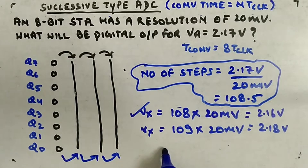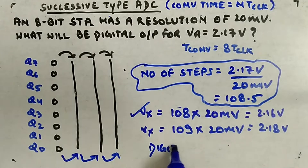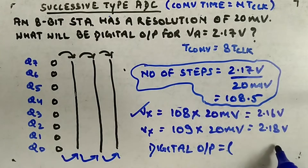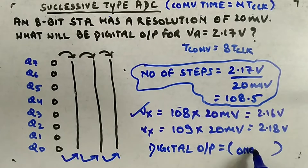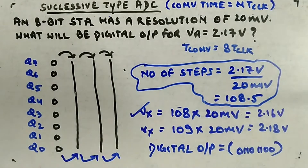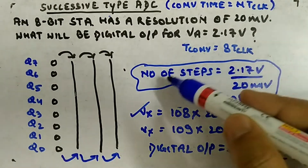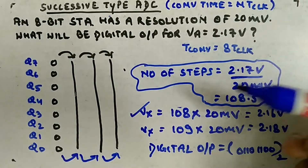That's why the answer is decimal 108. The digital output is just 108 converted to binary: 0110 1100. You can verify: 2 to the power 2 plus 2 to the power 3 plus 2 to the power 5 plus 2 to the power 6, which is 4 plus 8 plus 32 plus 64, equals 108. I wanted to explain this method first because it is the most important part — getting the rough idea of where the decimal equivalent should be.